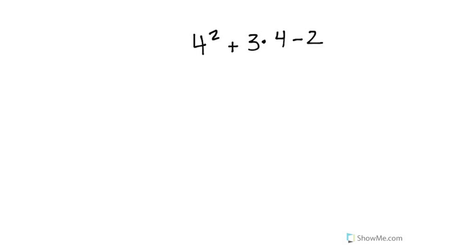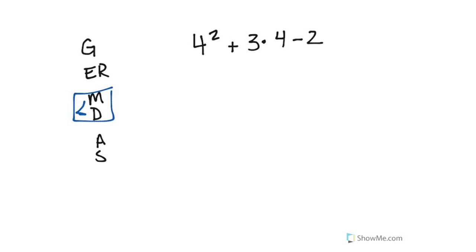Let's try another problem: 4 to the second power plus 3 times 4 minus 2. I have addition, multiplication, and subtraction — that's three operations, which tells me I have to use germ desks. I have to put these operations in the correct order. Step number 1 — grouping symbols. Do you have parentheses or brackets? Nope, I don't have any. Get rid of it. Step number 2 — exponents. Do I have that? Oh yeah, I sure do.